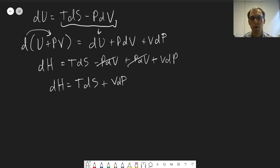And so the next step here is we can recognize, just like we did for du equals tds minus pdv, we have a natural set of independent variables here. h is going to be a function of entropy and pressure.